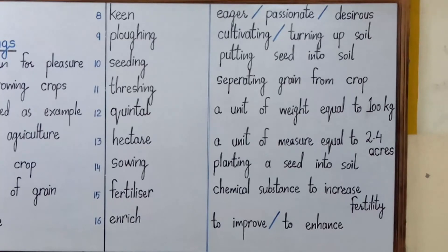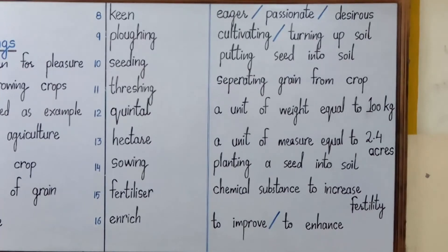Number fifteen is 'fertilizer'. Fertilizer is a chemical substance which is added to the soil to increase its fertility and to increase the growth of the crop.